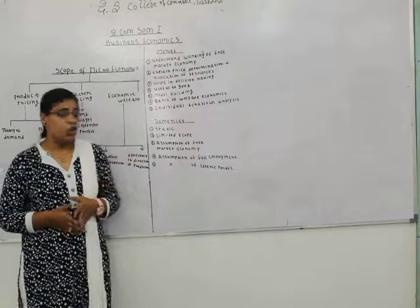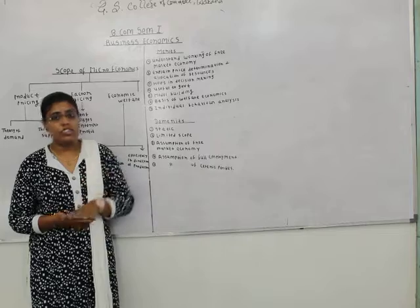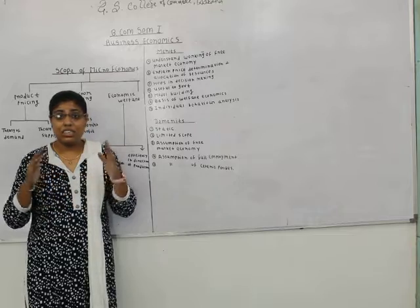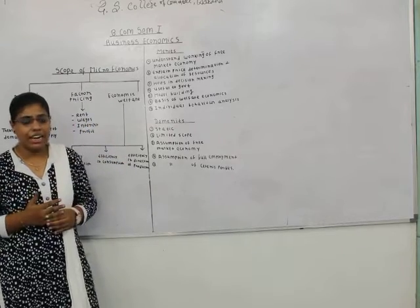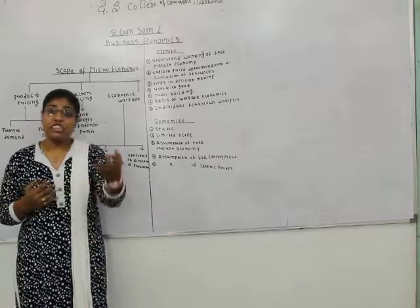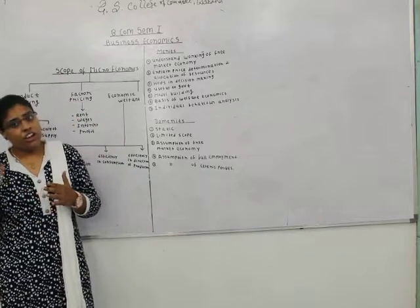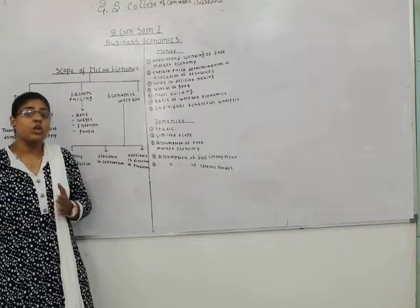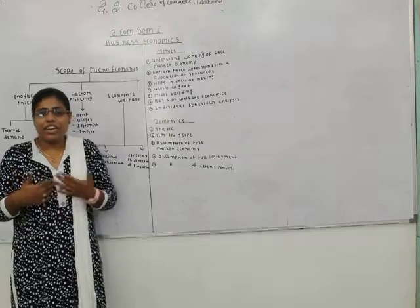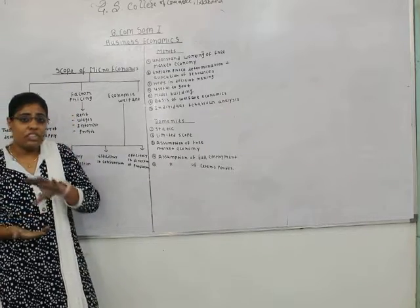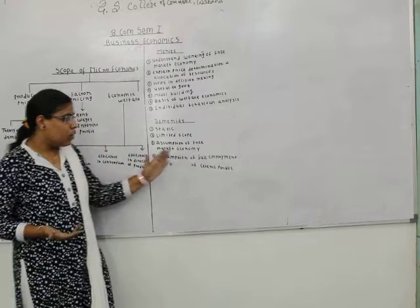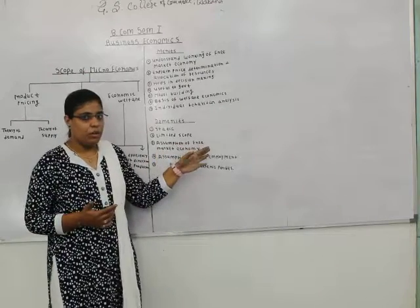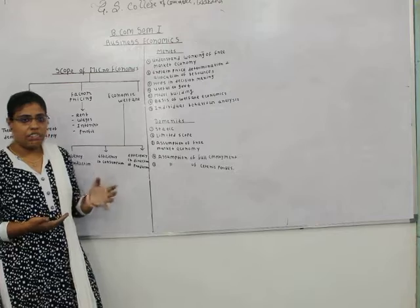The fourth demerit is the assumption of full employment — meaning full employment of resources and factors of production. However, Keynes says that full employment is a myth. He argued that full employment cannot be achieved in the short run, only in the long run — a long period relating to 100 or 200 years. Since we won't be alive to see it, this full employment condition is never found in realistic situations. Most microeconomic theories are based on this assumption, making them unsuitable for a dynamic economy.